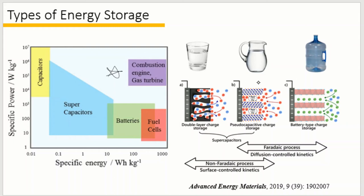There is one special device in between a battery and an electrical double layer capacitor called a pseudocapacitor. A pseudocapacitor is like a jar of water — it can store more energy than an electrical double layer capacitor and charge/discharge much faster than a battery. The charging mechanism of the pseudocapacitor is fundamentally different from the electrical double layer capacitor. A pseudocapacitor realizes energy storage by pseudocapacitive intercalation and surface redox reactions. In a pseudocapacitor, there is no phase transformation, so the charge process can be fast.